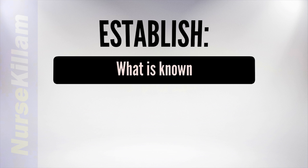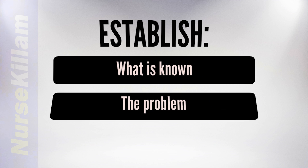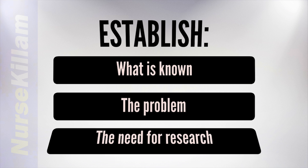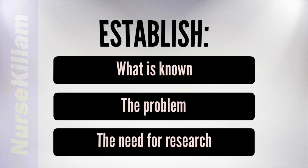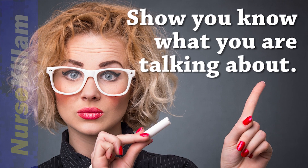In this section you need to establish what is known about your topic, clearly identify the research problem, and convince the reader that more research is needed. This section also helps to establish your own competence, since it shows that you have evaluated existing literature.